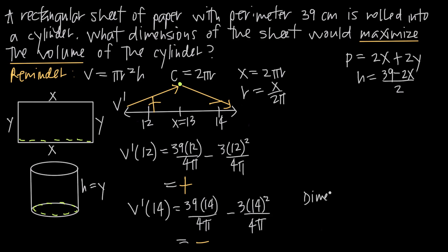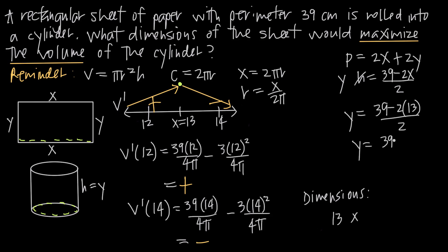Since y = h, we use our equation h = (39 − 2x)/2. Plugging in x = 13: y = (39 − 26)/2 = 13/2 = 6.5. So the dimensions of the rectangular sheet of paper must be 13 by 6.5 centimeters in order to maximize the volume of the cylinder, given that the perimeter is 39 centimeters.